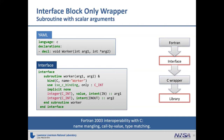The simplest case is just an interface-only wrapper. Here we're calling C, so that simplifies things. It generates an interface that is essentially exactly what the user would have to write themselves — it deals with name mangling via bind(C), call-by-reference versus call-by-value via the value attribute, and type matching. It uses just all Fortran 2003 interface features.